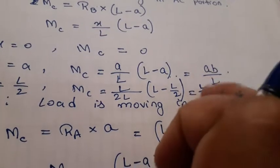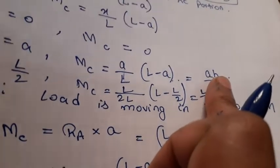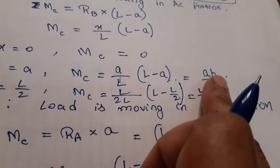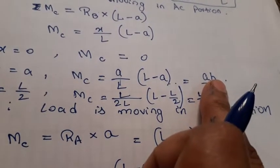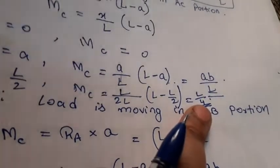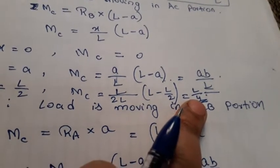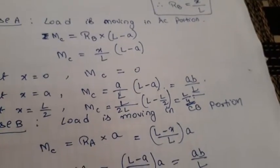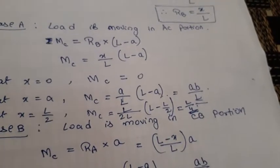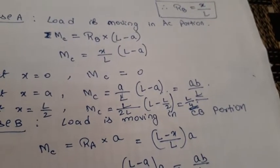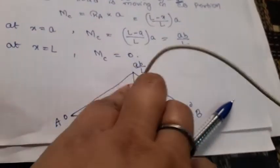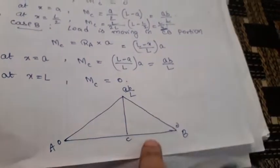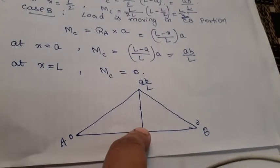When a single point load W acts on a simply supported beam at a distance A from support A, the bending moment at that section is WAB/L. If it acts at the center, it is WL/4. This is how we calculate the bending moment using the ILD: ordinate multiplied by the magnitude W gives you the bending moment. Thank you.